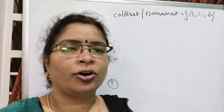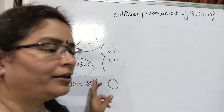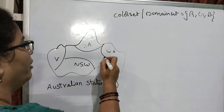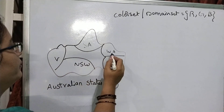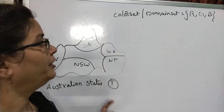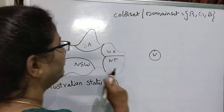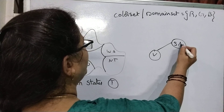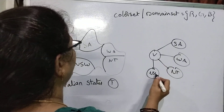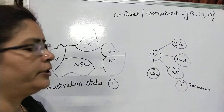The first example is graph coloring or map coloring. We are taking the example of the Australian states. This is the entire continent of Australia, which has various states: V (Victoria), SA (South Australia), WA (Western Australia), NT (Northern Territory), NSW (New South Wales), and Tasmania. These states are represented in the form of a graph, where V is connected to SA, WA, NT, and NSW, while Tasmania (T) is an isolated vertex not connected to anything.